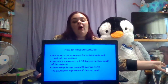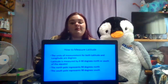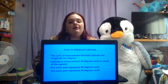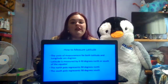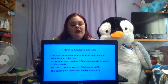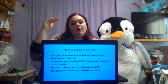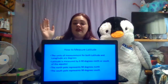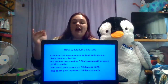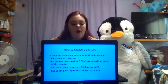When measuring latitude and longitude, our units are degrees. Latitude is measured from zero to 90 degrees north or south of the equator, so measurements for latitude cannot be larger than 90 degrees or smaller than zero. The north pole represents 90 degrees north and the south pole represents 90 degrees south.